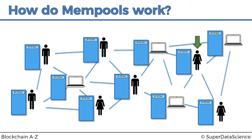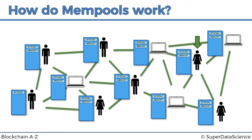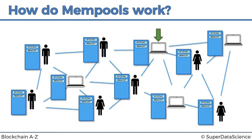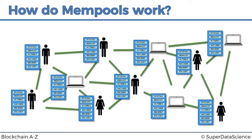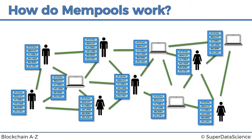Then let's say Mary over here also wants to do a transaction. Mary does her transaction and it gets relayed through the network to every single node as well. Then let's say one of the miners wants to do a transaction - usually they just mine, but they can also do transactions. So the miner does a transaction and again it gets relayed through the network.